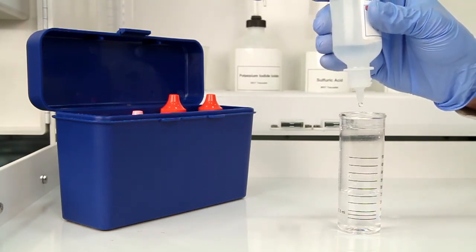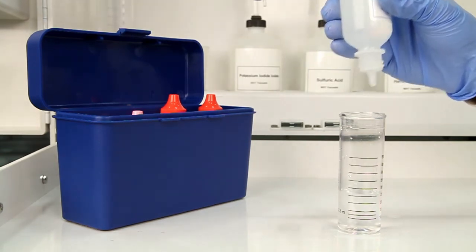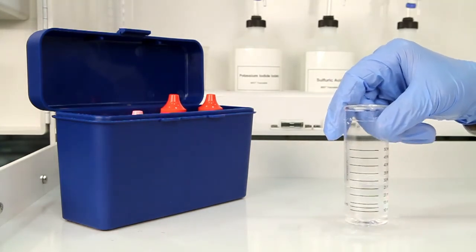After the addition of each reagent, swirl the vial to make sure the reagents are properly mixed. You may also choose to remove the dropper tip and use a syringe to add 1 ml of barium chloride to the sample.